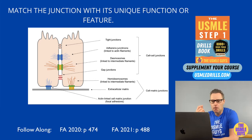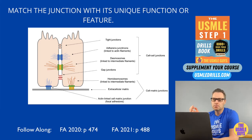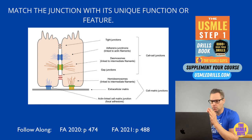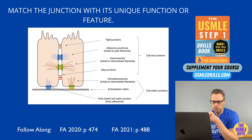Starting from the top, we have the tight junctions, also known as the zona or zonula occludens. These prevent cellular movement of solutes, and are composed of claudins and occludins. The adherens junction, also known as the zonula adherens, connects the actin cytoskeletons of adjacent cells with cadherins, which are calcium-dependent adhesion proteins.